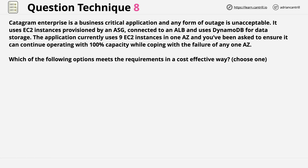This is the question we're reviewing in this lesson. Catagram Enterprise is a business-critical application, and any form of outage is unacceptable. It uses EC2 instances provisioned by an auto-scaling group, connected to an application load balancer, and uses DynamoDB for data storage. The application currently uses 9 EC2 instances in one availability zone, and you've been asked to ensure it can continue operating with 100% capacity while coping with the failure of any one availability zone. Which of the following options meets the requirements in a cost-effective way, and you're asked to choose one?